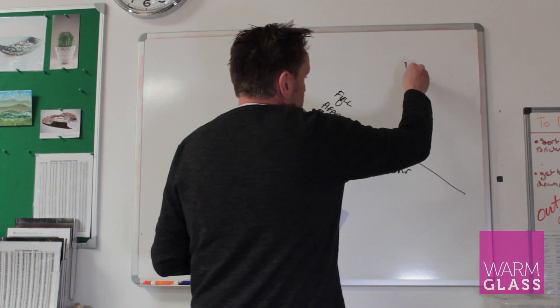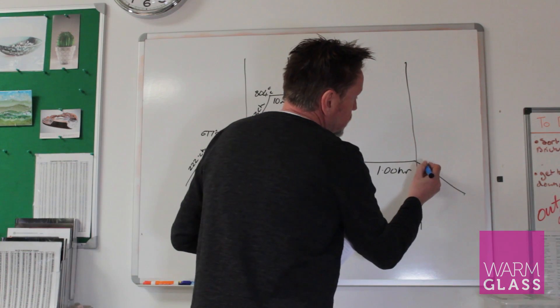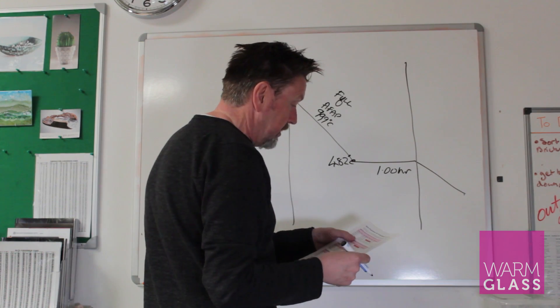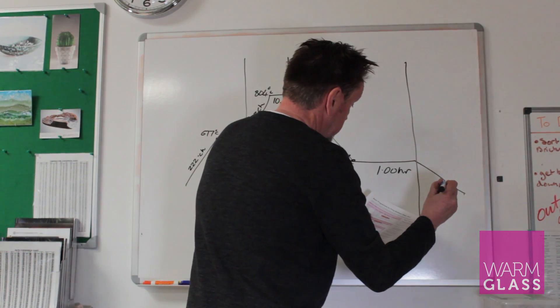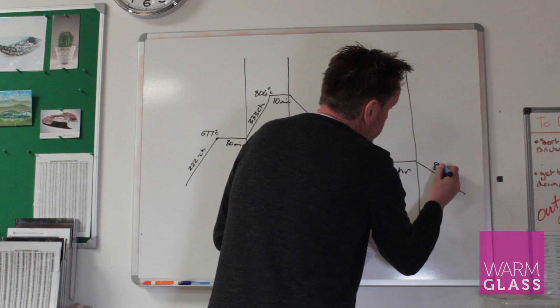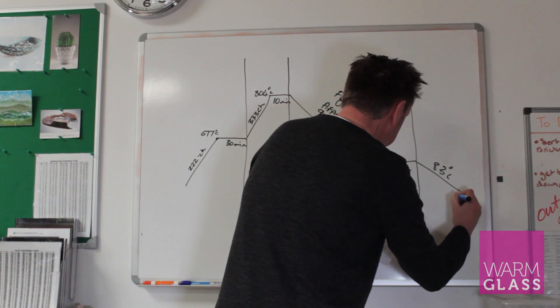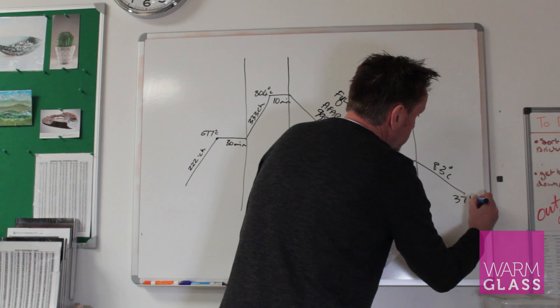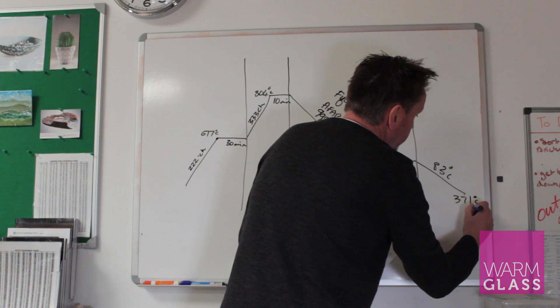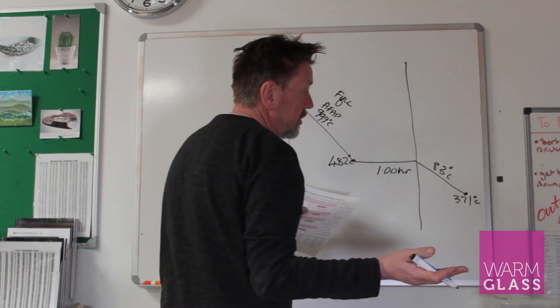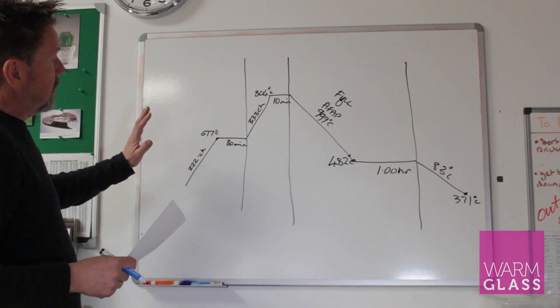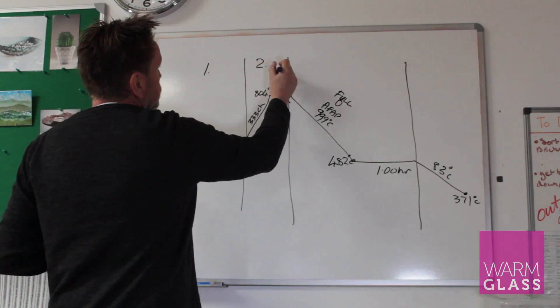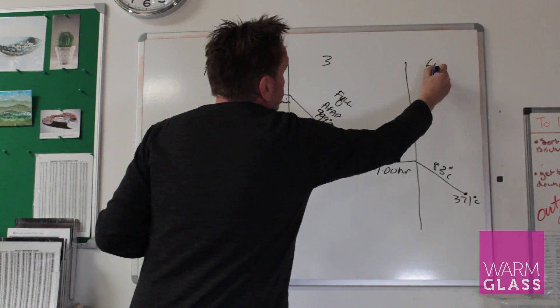So that's another segment. And then this is just the cooling section after that. So in this program we go 83 degrees centigrade to 371 degrees centigrade. And then that's the end. So there's no hold time, it's just the end of the program. So that's how a four-segment program is made up. Segment one, segment two, segment three, segment four.